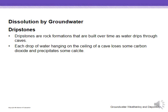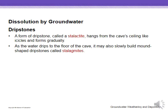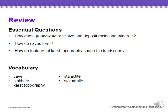Dripstones are rock formations built over time as water drips through caves. Each drop carries atoms of calcite. A stalactite is a form of dripstone that hangs from the ceiling. A stalagmite is another form that grows out of the floor.